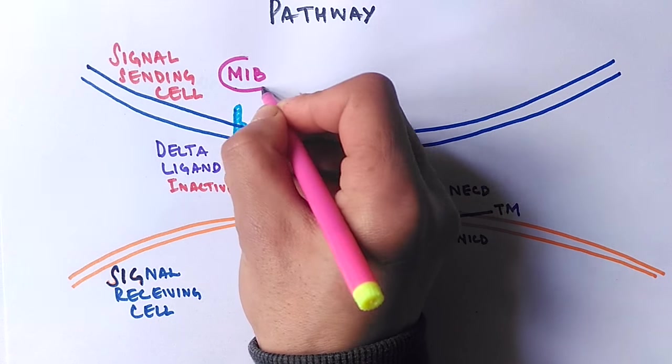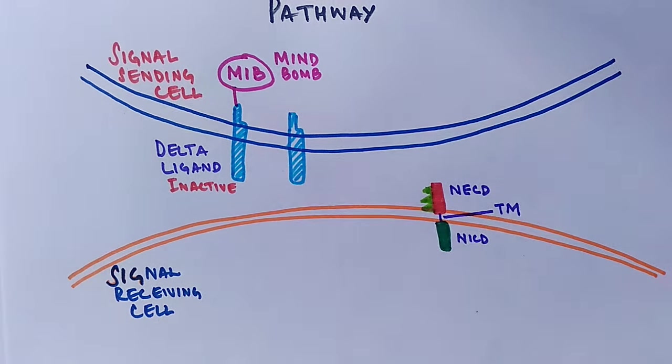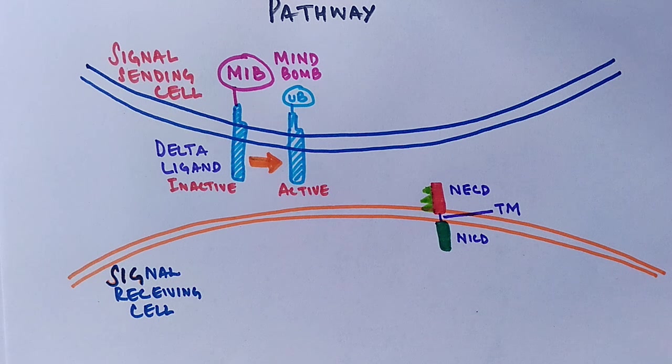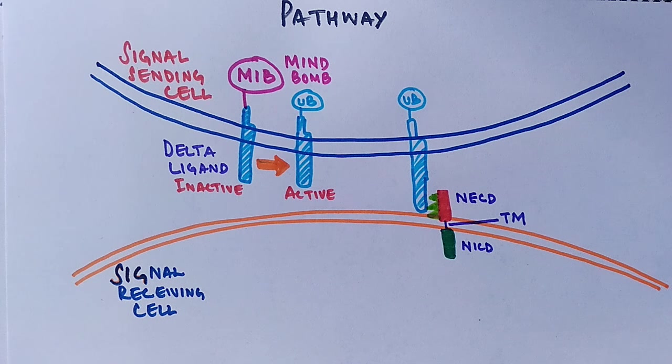In the presence of ubiquitin activating enzyme, the mind bomb protein promotes ubiquitination and activates the delta ligand of the signal sending cell. Then this delta ligand moves on and interacts with the extracellular domain of the NOCH receptor.